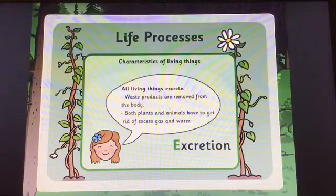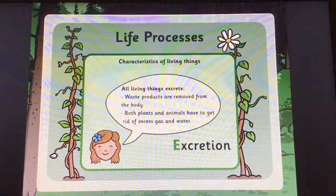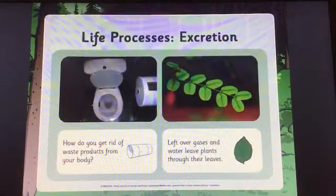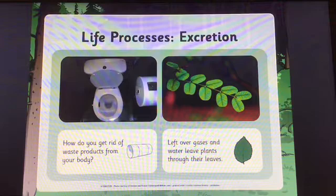Excretion. All living things excrete. Waste products are removed from the body. Both plants and animals have to get rid of excess gas and water. How do you get rid of waste products from your body? Leftover gases and water leave plants through their leaves.